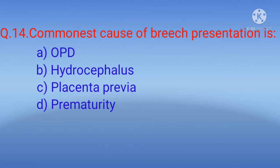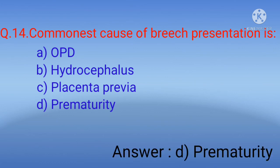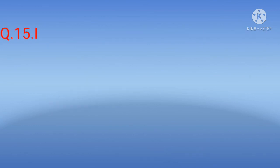Question 14: The commonest cause of breech presentation is — options include prematurity. The correct option is D) prematurity.